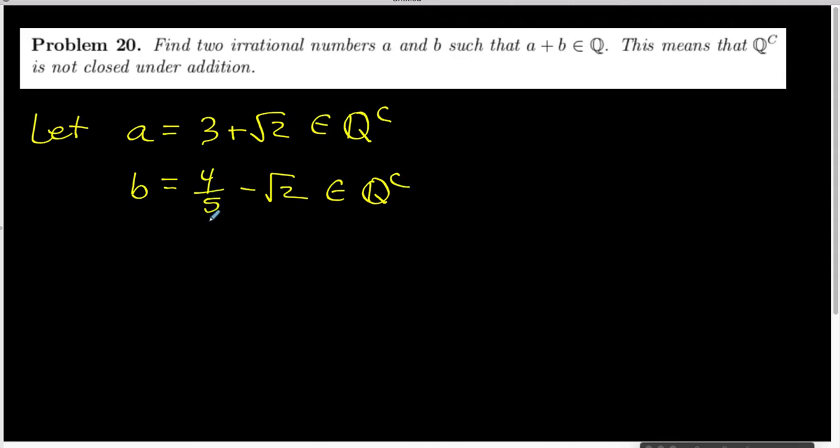If this 4 fifths is rational and minus the square root of 2 is irrational, and that sum, or in this case, the difference, is irrational by previous problems.